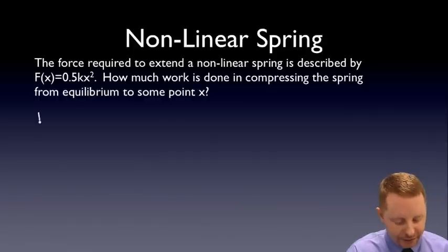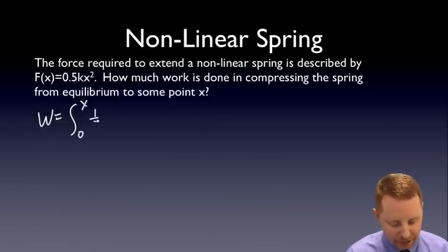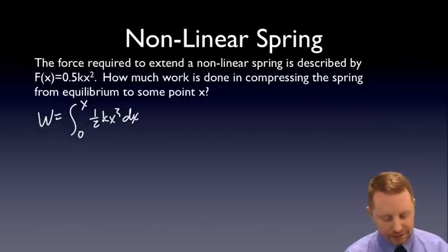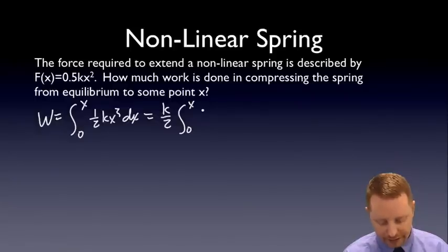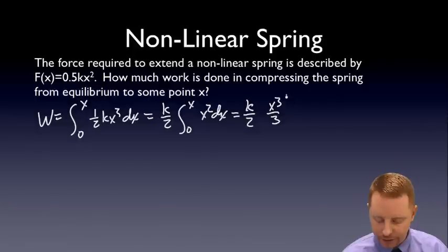All right. Well, same basic idea. Work is going to be our integral from zero to x of f of x dx. But now f of x is one half k x squared dx. Our one half k can come out. So that's k over two integral from zero to x of x squared dx. Or k over two.